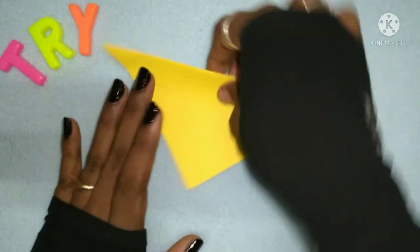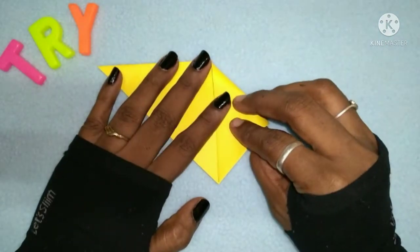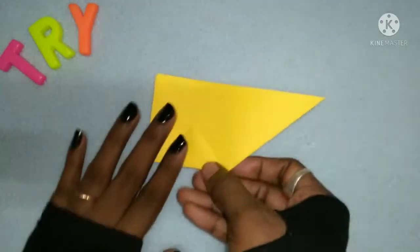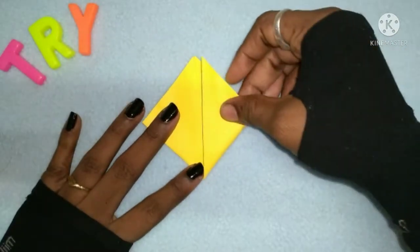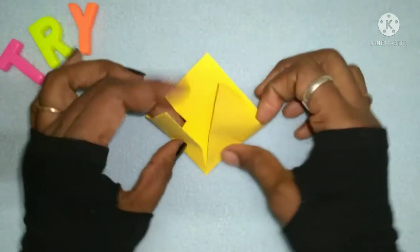Fold it in half. Add two corners to the middle. Then open the middle.